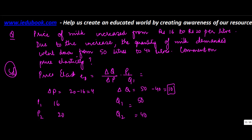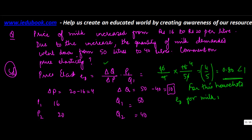Now you put down these values in the formula. Delta Q is 10, Delta P is 4, times P1 upon Q1, which gives 4 by 5 or 0.80, which is less than 1. So we say for this household, elasticity of demand for milk is less than unitary.